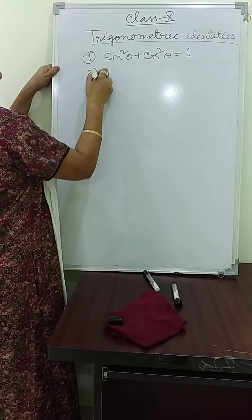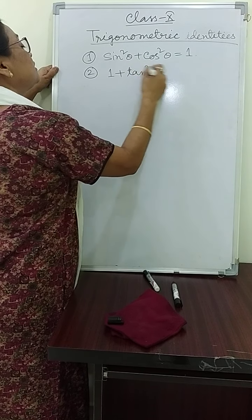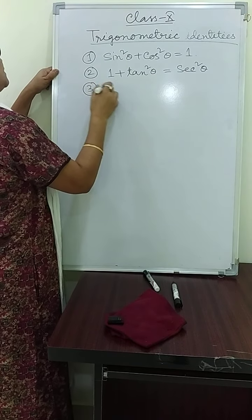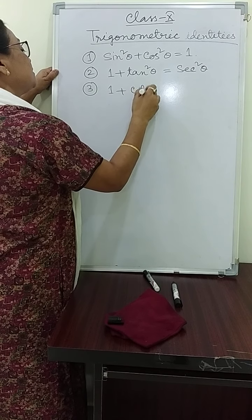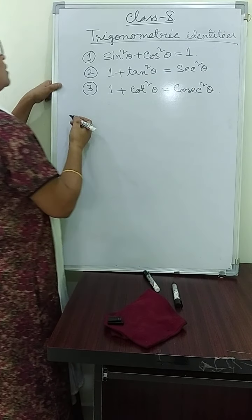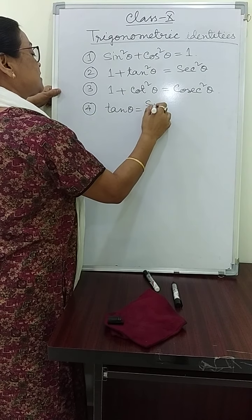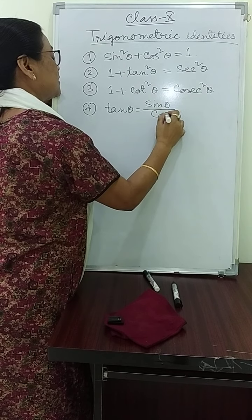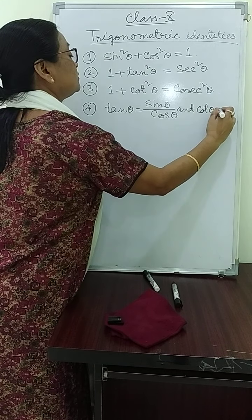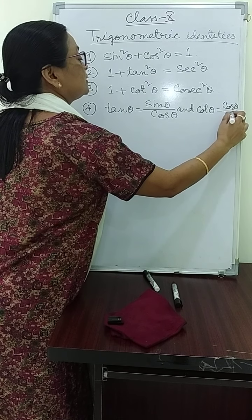Number one: sin²θ + cos²θ = 1. Number two: 1 + tan²θ = sec²θ. Number three: 1 + cot²θ = cosec²θ. Also, tan theta equals sin theta by cos theta, and cot theta equals cos theta by sin theta.